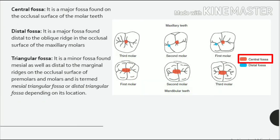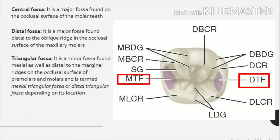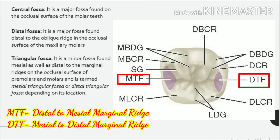Central fossa: it is a major fossa found on the occlusal surface of the molar teeth. Distal fossa: it is a major fossa found distal to the oblique ridge on the occlusal surface of the maxillary molars. Triangular fossa: it is a minor fossa found mesial as well as distal to the marginal ridges on the occlusal surface of premolars and molars, termed mesial triangular fossa or distal triangular fossa depending on its location. The mesial triangular fossa is seen distal to the mesial marginal ridge and the distal triangular fossa is seen mesial to the distal marginal ridge.